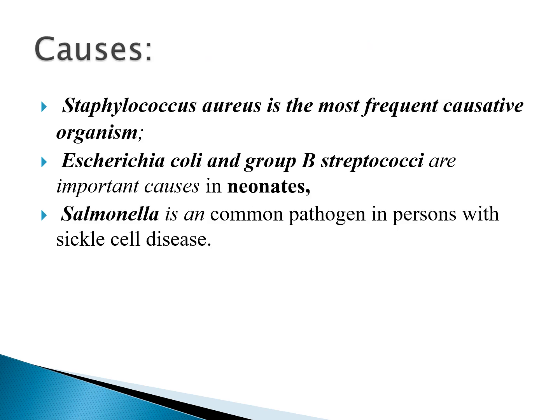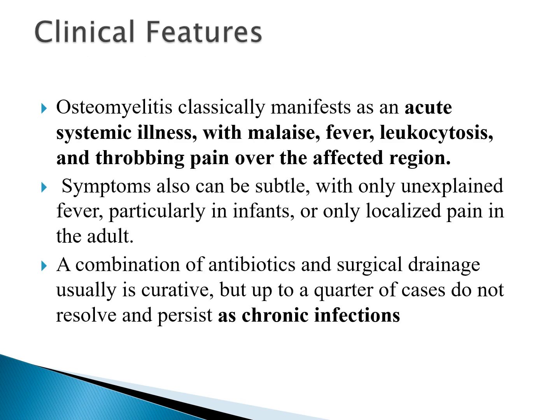The causes of pyogenic osteomyelitis vary by age. Staphylococcus aureus is the most frequent causative organism overall. E. coli and group B Streptococci are important causes in neonates and can also cause septic arthritis. Salmonella is an important pathogen in patients with sickle cell disease. Clinically, osteomyelitis presents as an acute systemic illness with sudden onset, malaise, fatigue, fever, leukocytosis, and throbbing pain over the affected region.